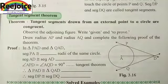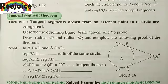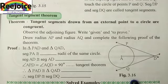We need to learn an important theorem: the Tangent Segment Theorem. Let's find out the statement of the theorem. It is given on Page No. 53. Theorem: Tangent segments drawn from an external point to a circle are congruent. You can see the figure 3.16.